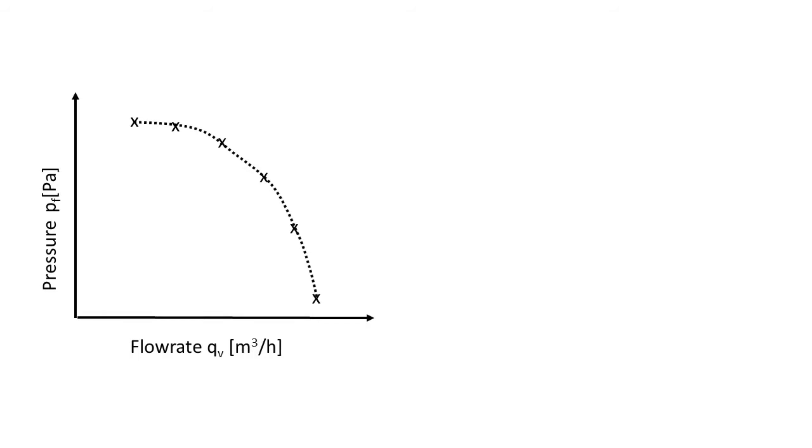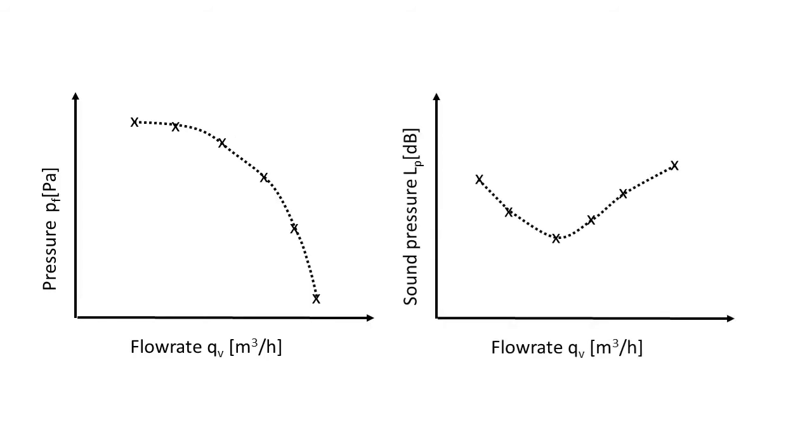Each point on the curve is called an operating point. There is also a different curve, which shows the noise for each operating point. Both the pressure and the noise are measured in a double reverberant room.